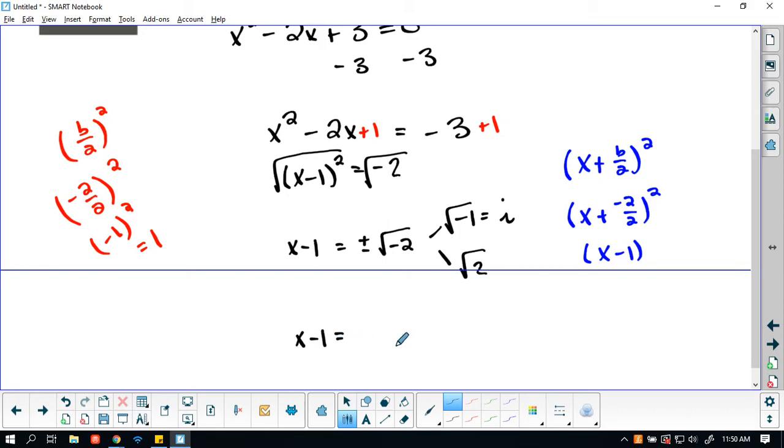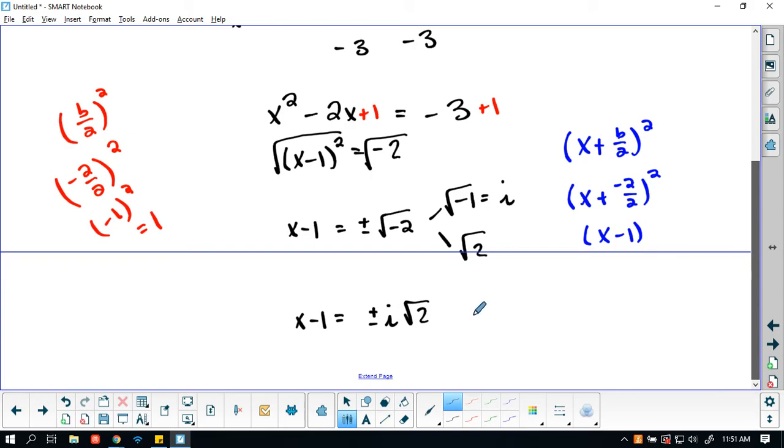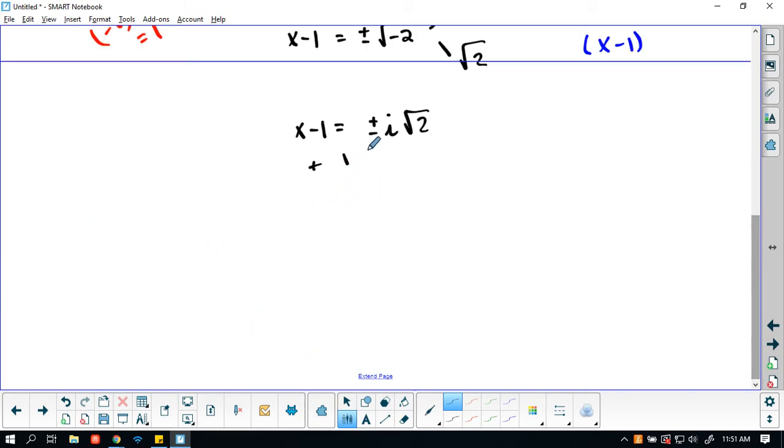Now we have x - 1 equals plus or minus i times the square root of 2. I can't simplify the square root of 2 anymore; it's an irrational number, so I'm going to leave it as the square root of 2 to be precise rather than estimate. So I'm going to add 1 to both sides, and I get x = 1 ± i√2.